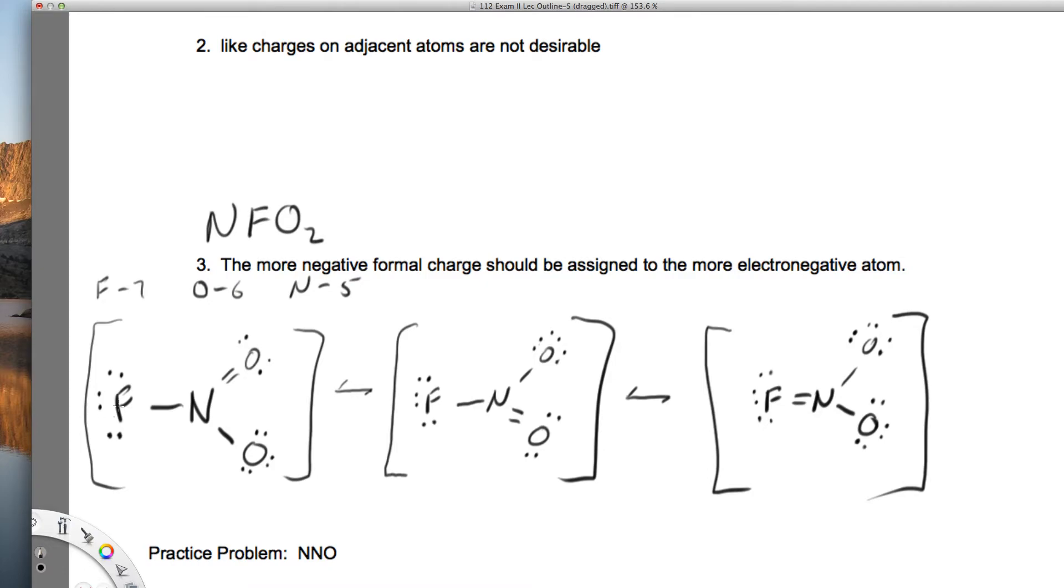That gives us seven minus six minus one. So the formal charge on fluorine is zero.